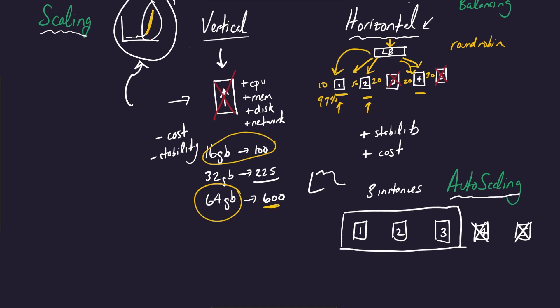And then you set a metric to say when connections goes above some key value, then add another instance. And when it goes below, then remove an instance. Or you can do it based on CPU utilization. There's a whole bunch of different metrics that you can hook into to automatically add and remove instances.